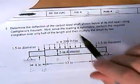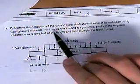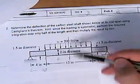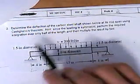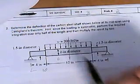Okay, so for ME304, from the Shigley book again, we have this problem. Determine the deflection of the carbon steel shaft shown below at its midspan, this line, using Castigliano's theorem. Since the loading is symmetric, perform the required integration of only half of the length and then multiply the result by 2.